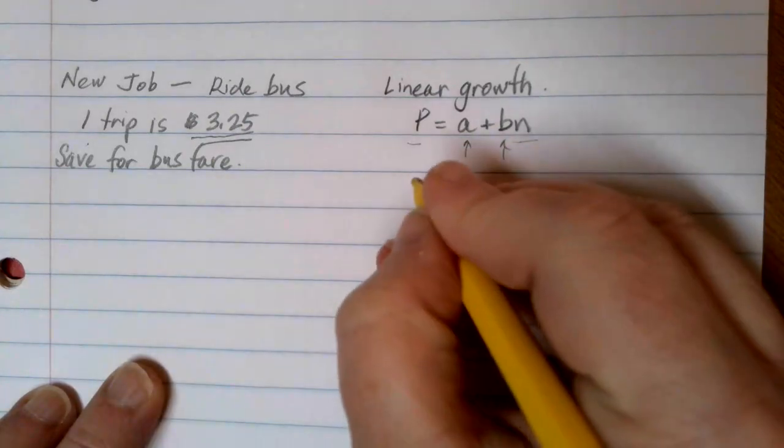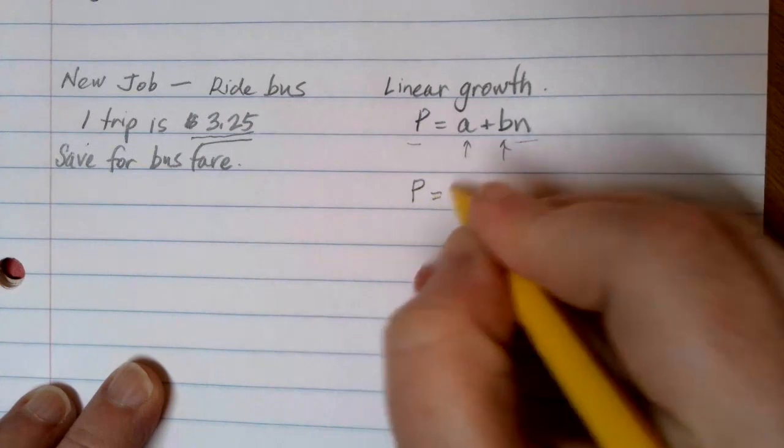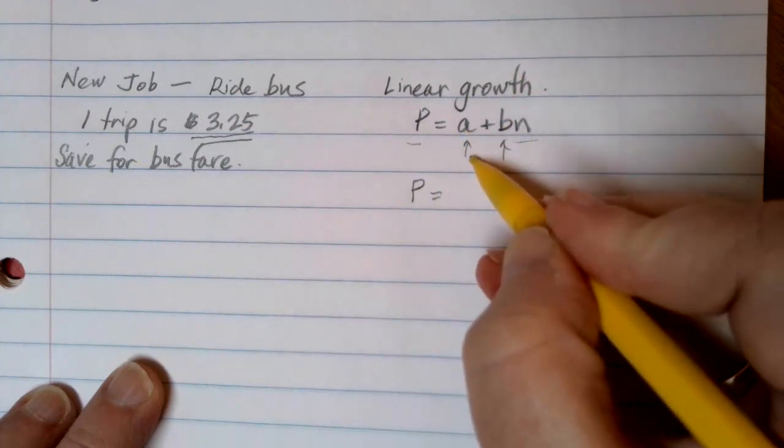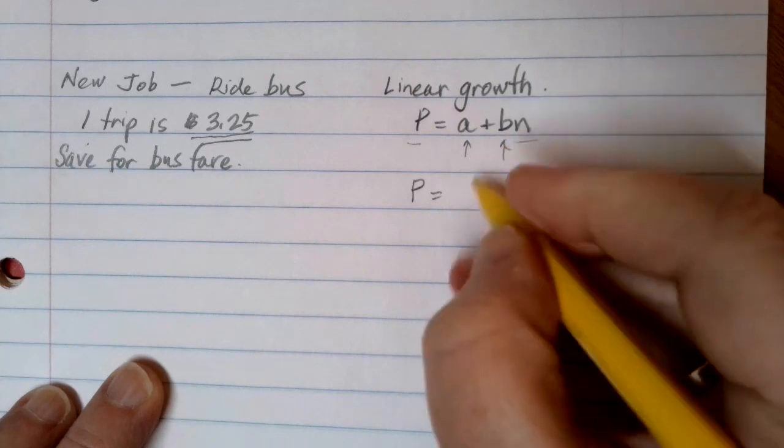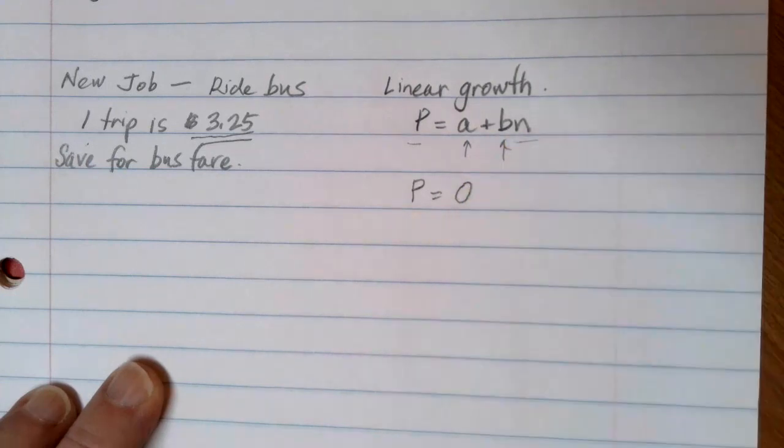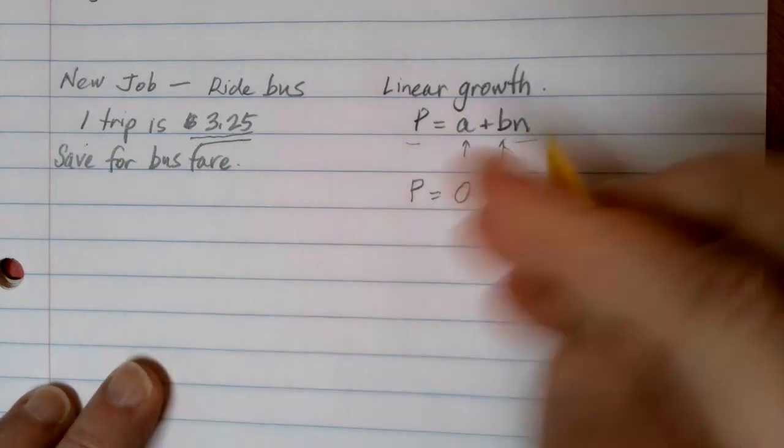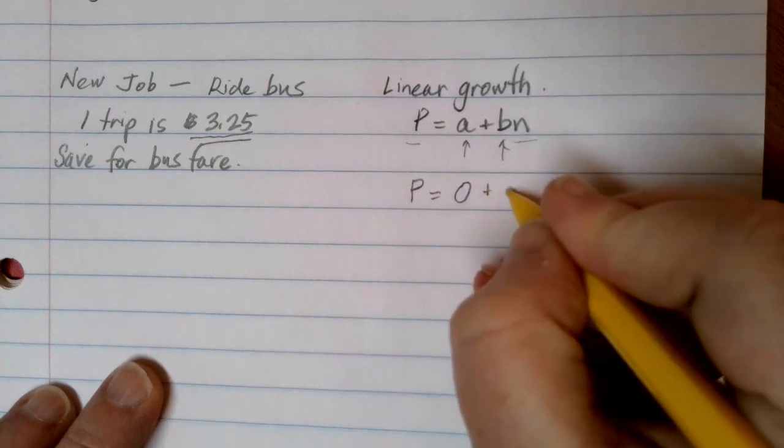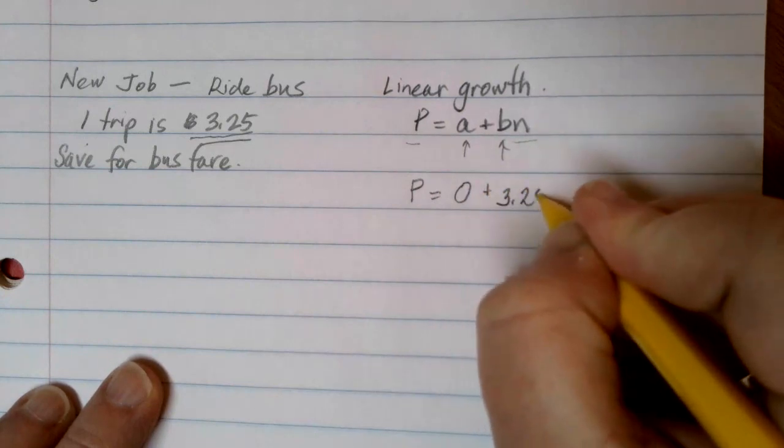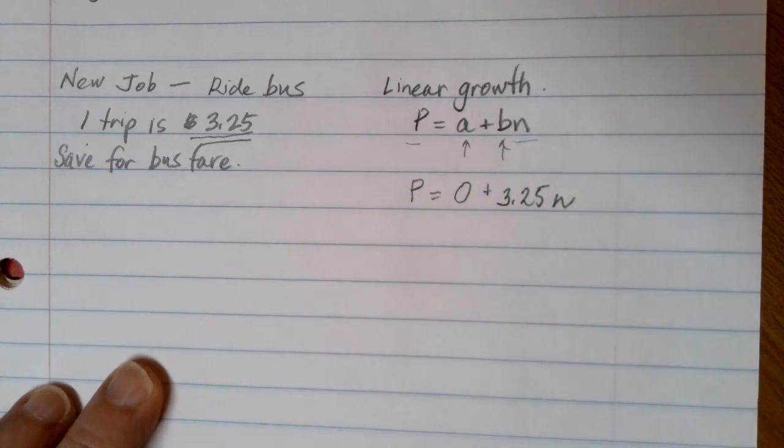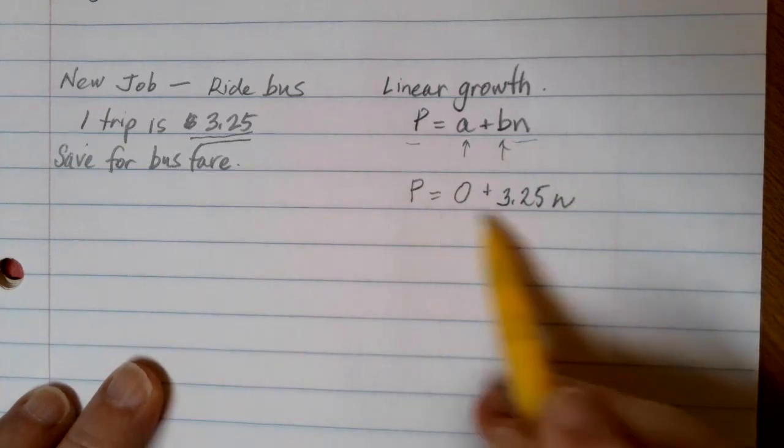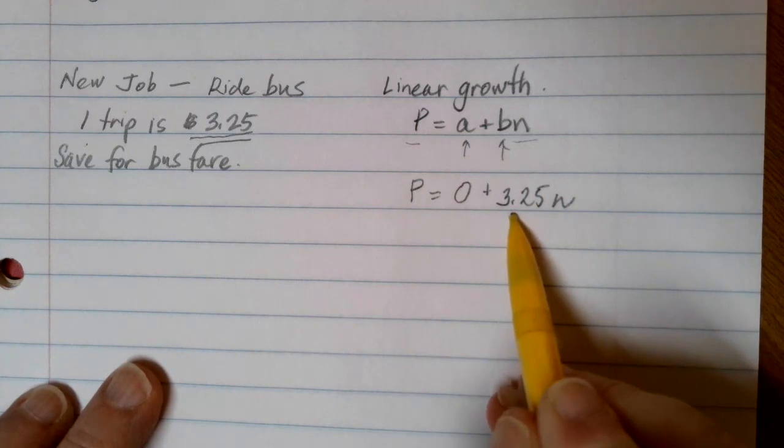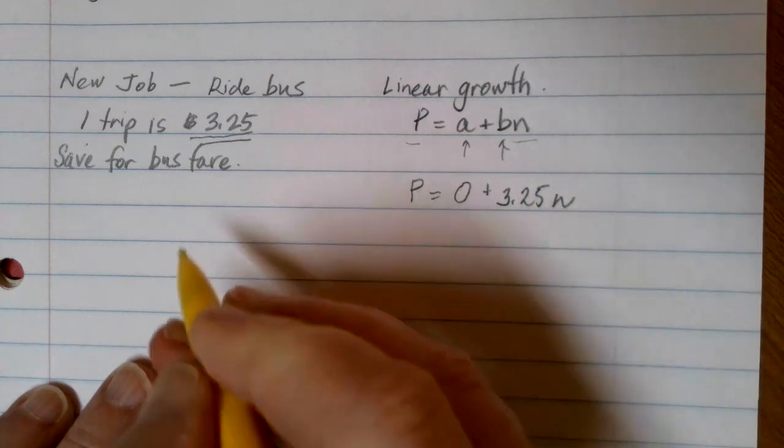So P is equal to my A value, the starting value. Or what happens when we have zero trips? Well, if I have zero trips, I don't have to pay any money for bus rides. My rate of change is $3.25 for every trip on the bus. So I can figure out my price just by multiplying $3.25 by the number of times I ride the bus.